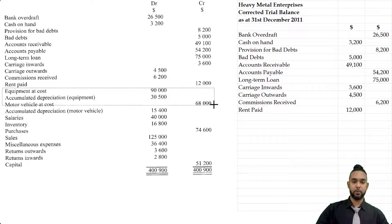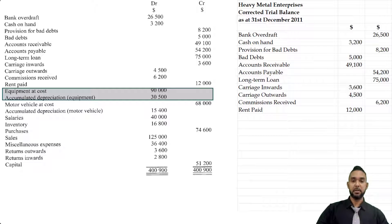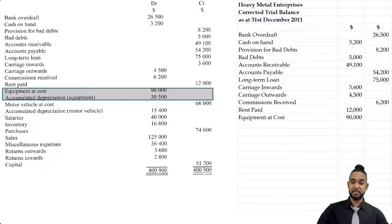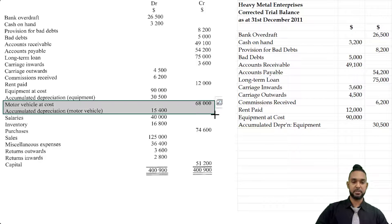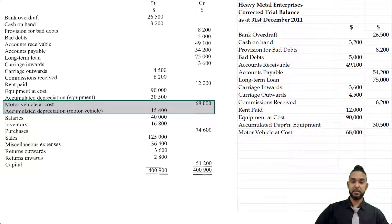Next we have equipment at cost and accumulated depreciation for the equipment. Equipment is an asset and assets have debit balances. Accumulated depreciation, much like the provision for bad debts, is a contra asset — its function is to reduce the balance of the equipment in the balance sheet. To reduce a debit balance you need a credit balance item. Motor vehicle is also an asset with a debit balance, and accumulated depreciation on the motor vehicle is likewise a contra asset with a credit balance.